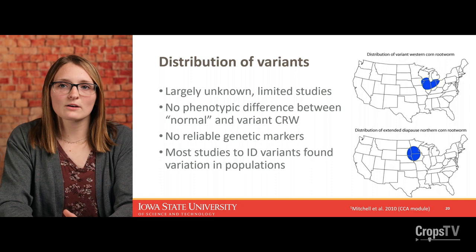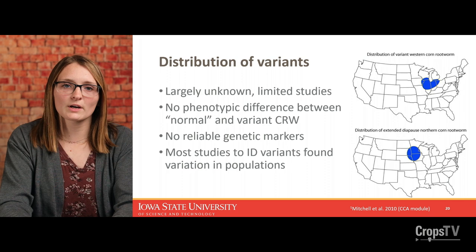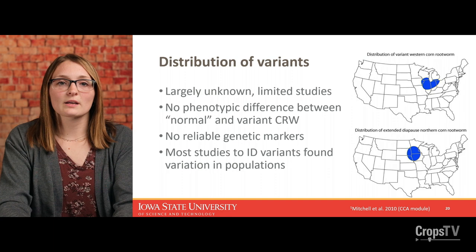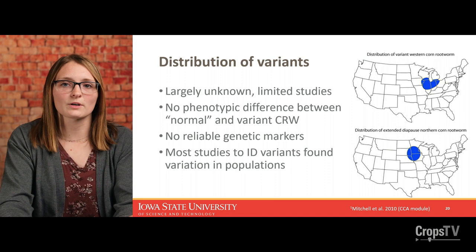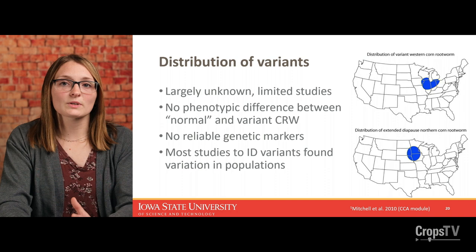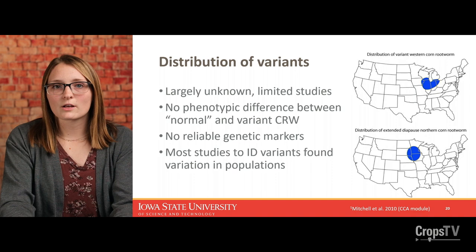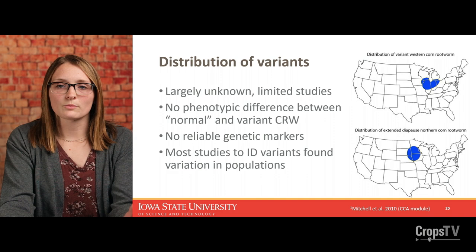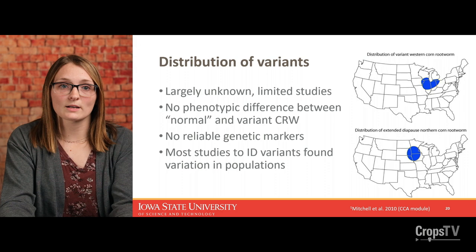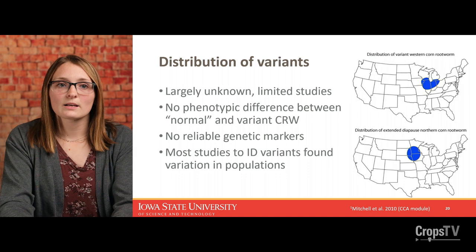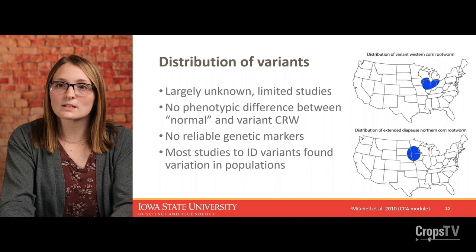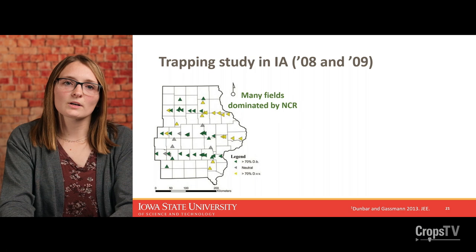A common question is where are these variants occurring in the United States? These maps are a little older and somewhat outdated based on recent studies finding corn rootworm variants. It's largely unknown — very limited studies have been done on this topic — but these maps are a good starting point to assess risk. It's really hard to do this research because you usually have to bring specimens back to the lab and do time-consuming assays. Also, there's no visual difference between a normal corn rootworm and a variant, and we don't have any reliable genetic markers, so there's no gene test available at this time.